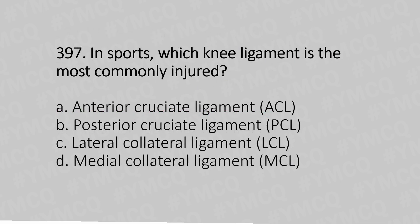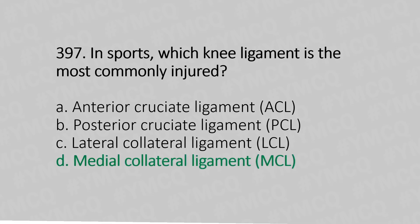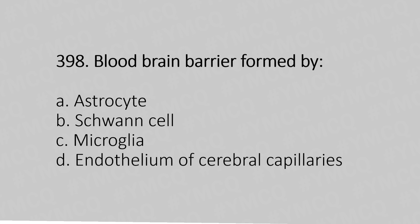Question 397: In sports, which ligament is most commonly injured? Option A: anterior cruciate ligament. Option B: posterior cruciate ligament. Option C: lateral collateral ligament. Option D: medial collateral ligament. The answer is Option D: medial collateral ligament.